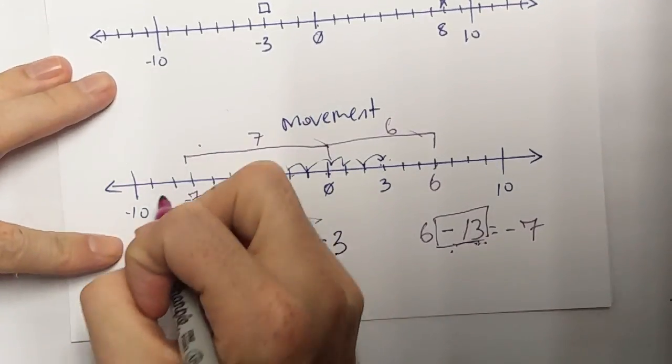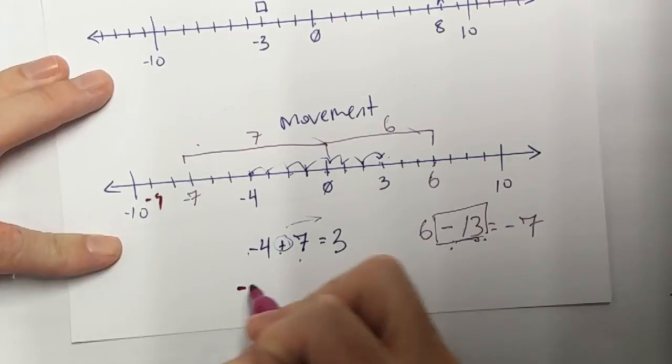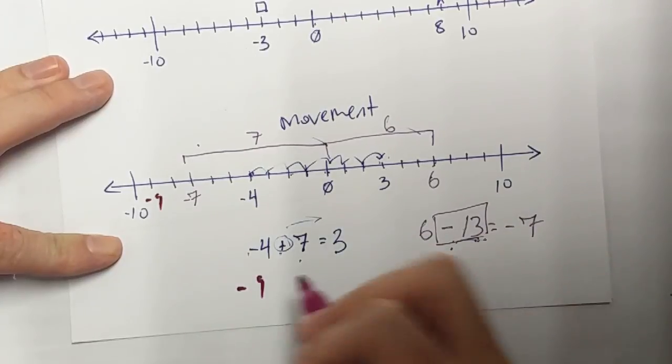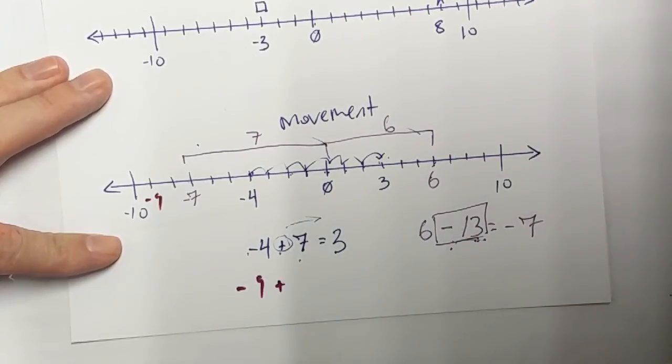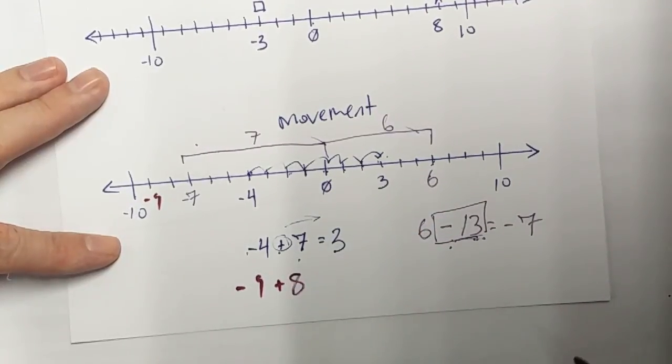I'm going to start off over here at negative 9. So I'm at negative 9. And I'm going to have an increase. I'm going to move to the right a total of 8. Where do I end up?